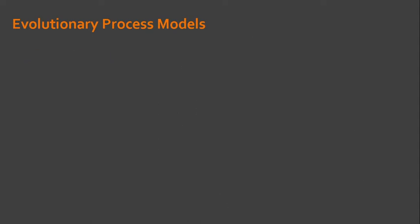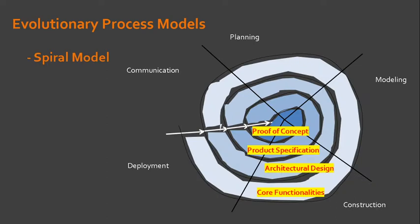It means that during the early stages of development, the initial circuit around the spiral might be used to develop a proof of concept. Afterwards, in the next evolution, the product specification may be produced. Afterwards, the architectural design, then the core functionalities, followed by other features as the system continues.